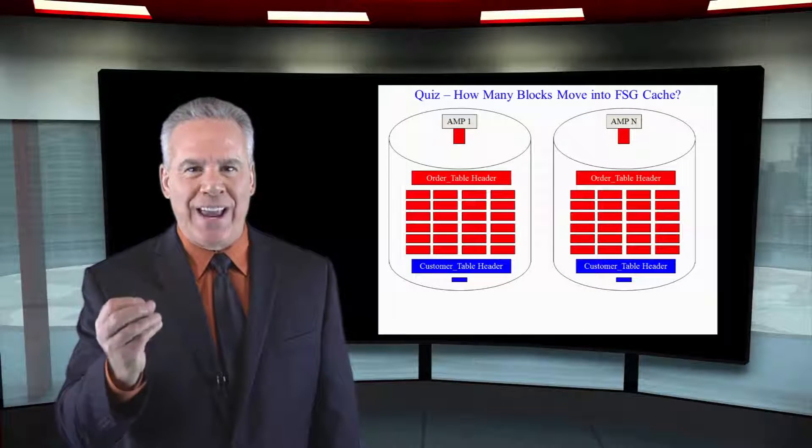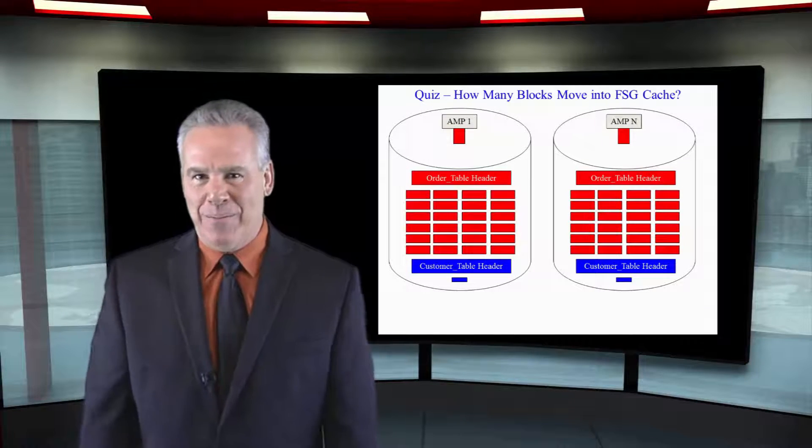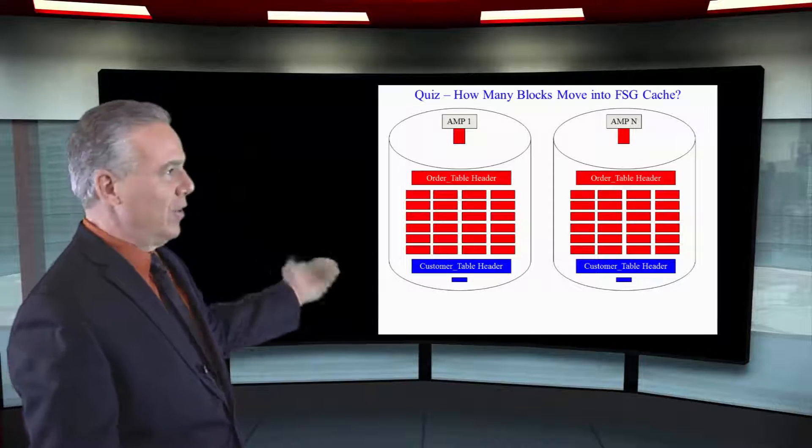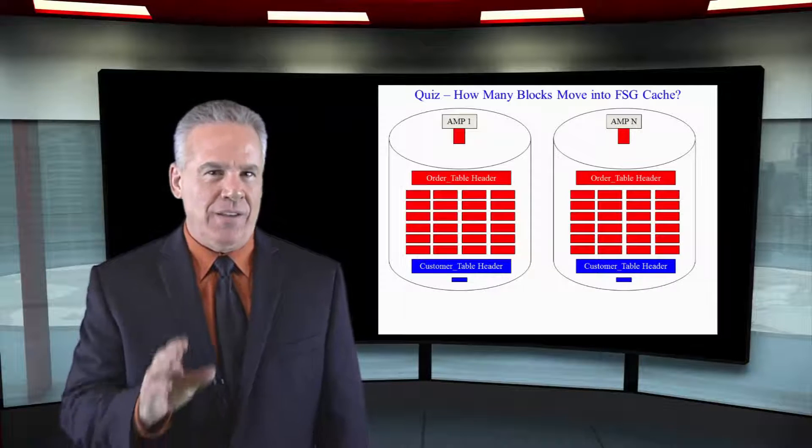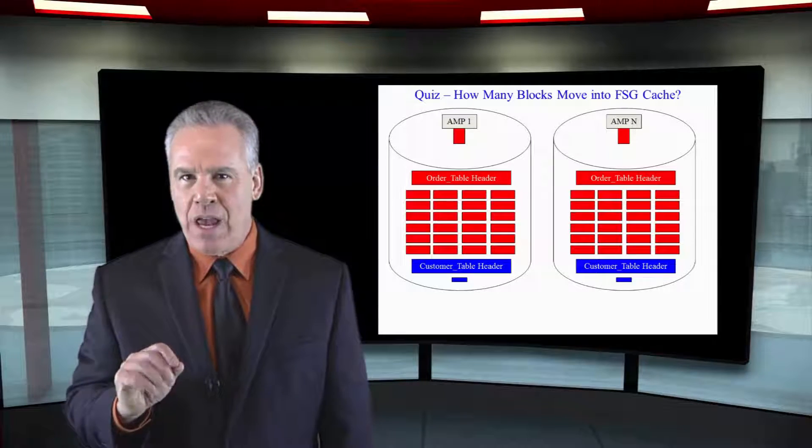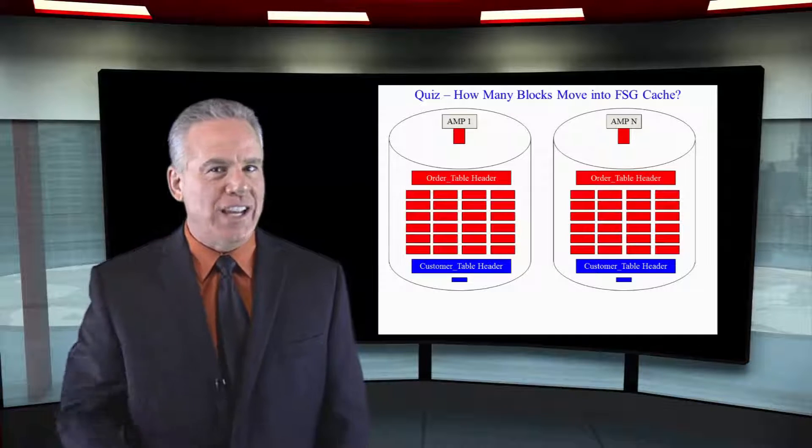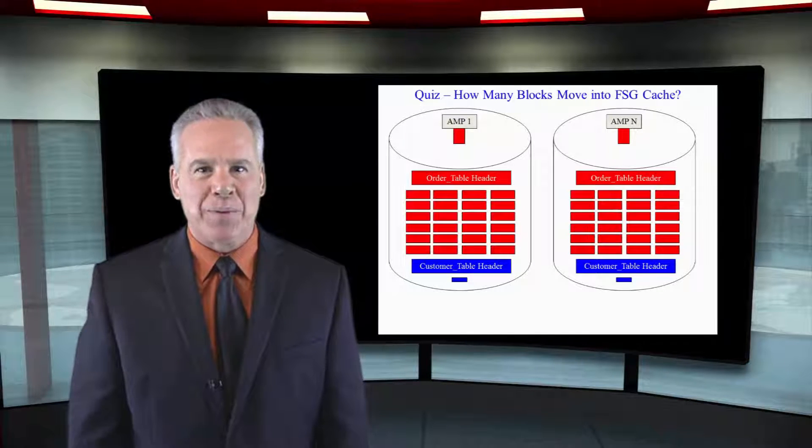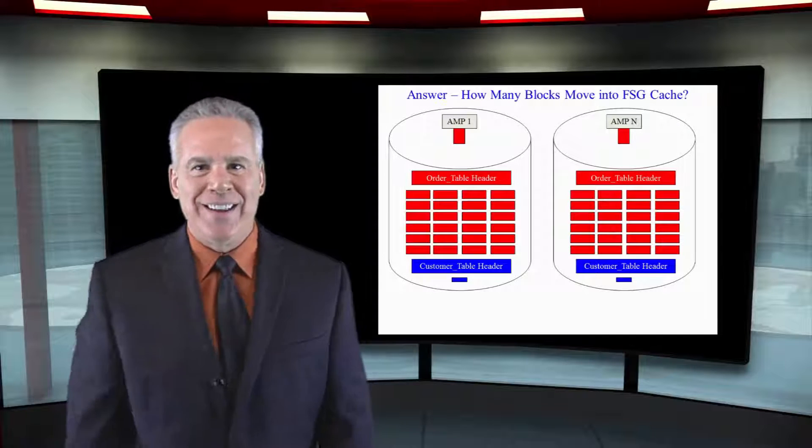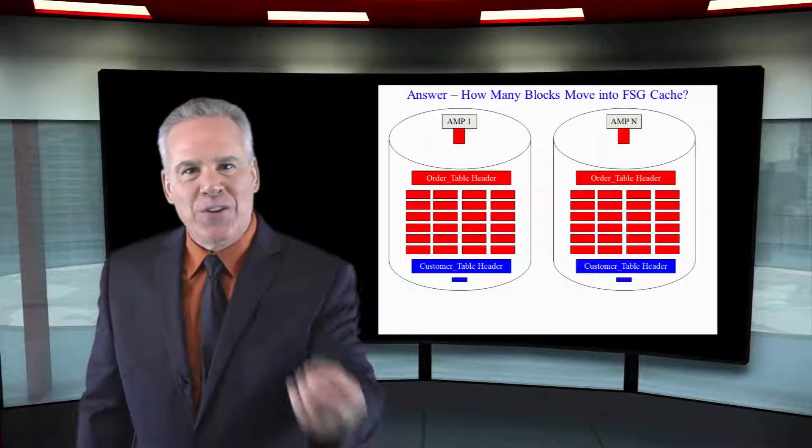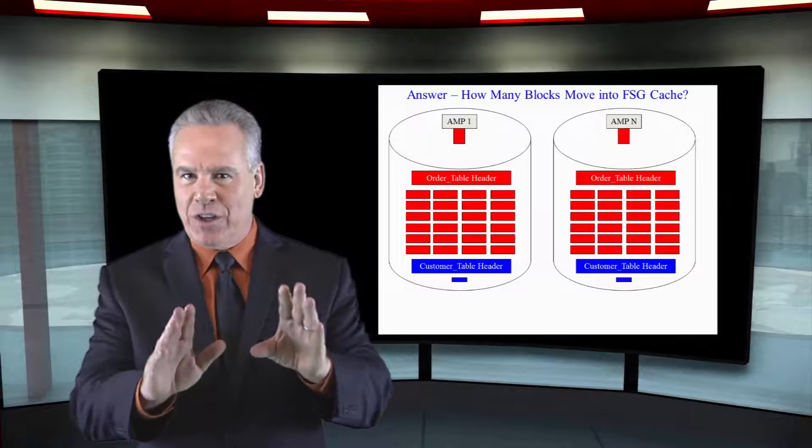We're doing a full table scan on our order table. Notice that each amp has 24 blocks of orders. If we do a full table scan here, how many blocks are going to move into FSG cache per amp? Yeah, you nailed it. You said 24. You're really getting this down. That's the way it's going to work.